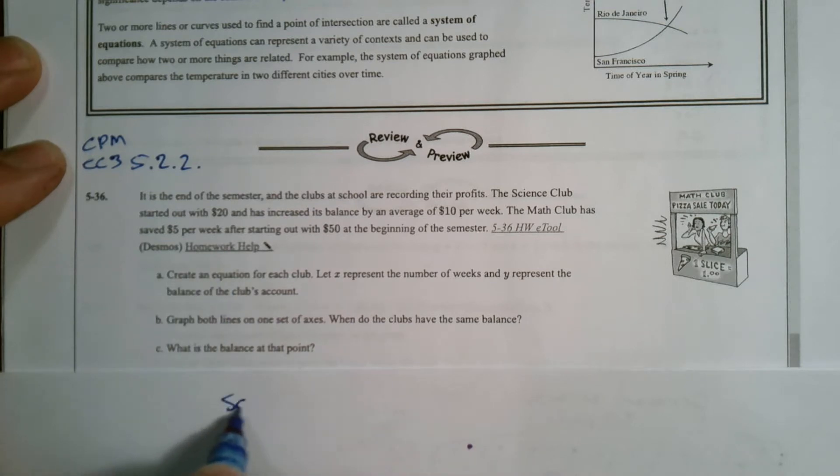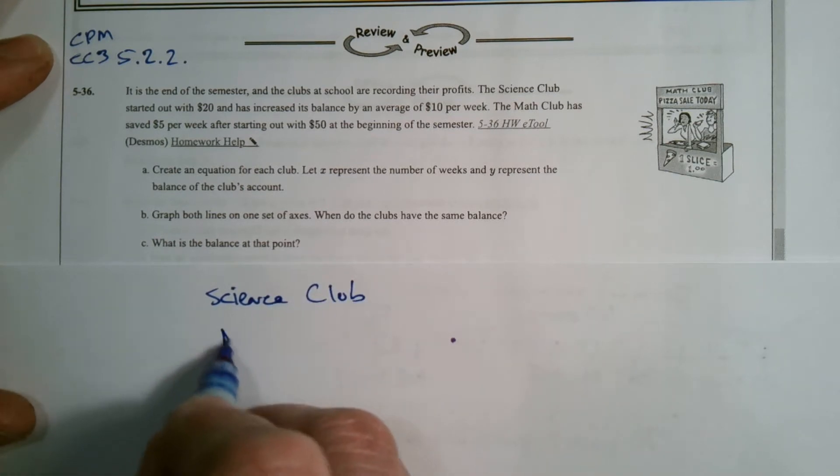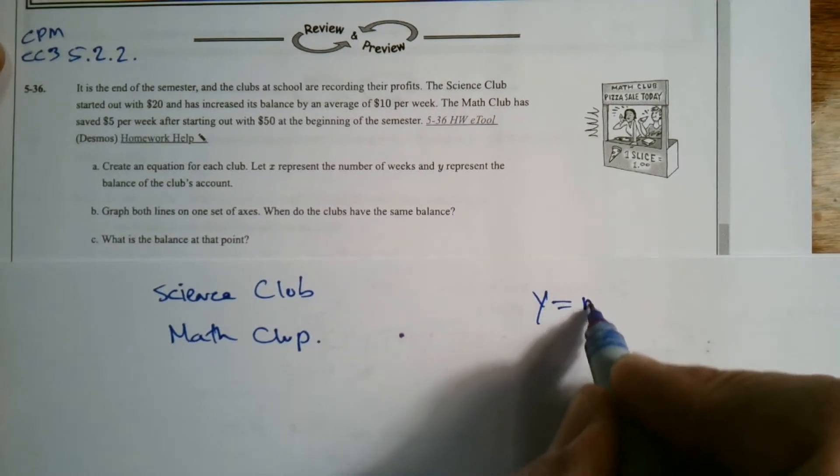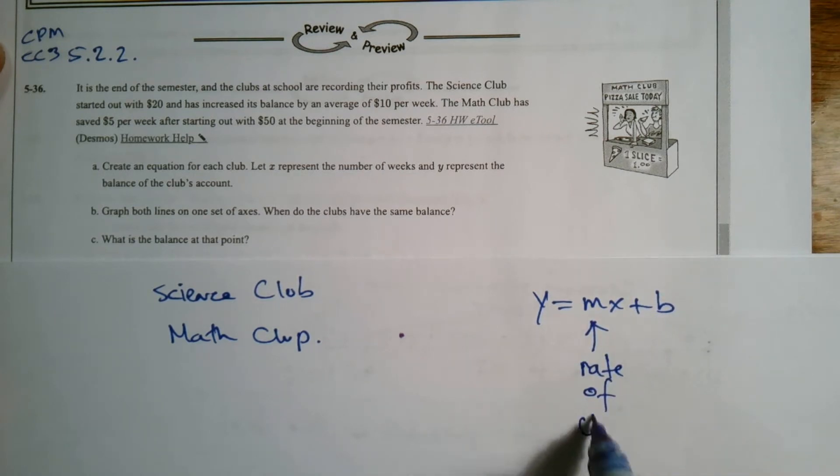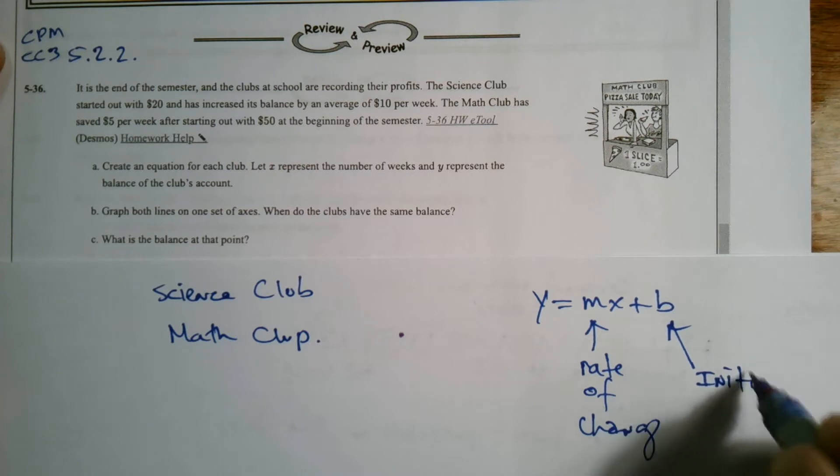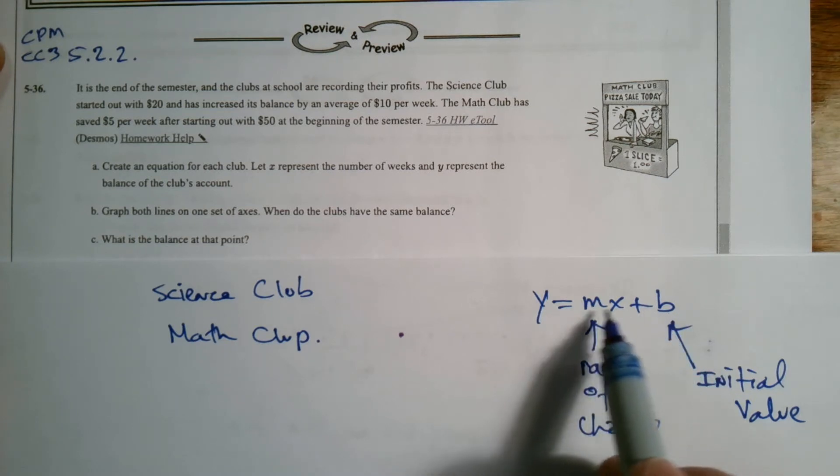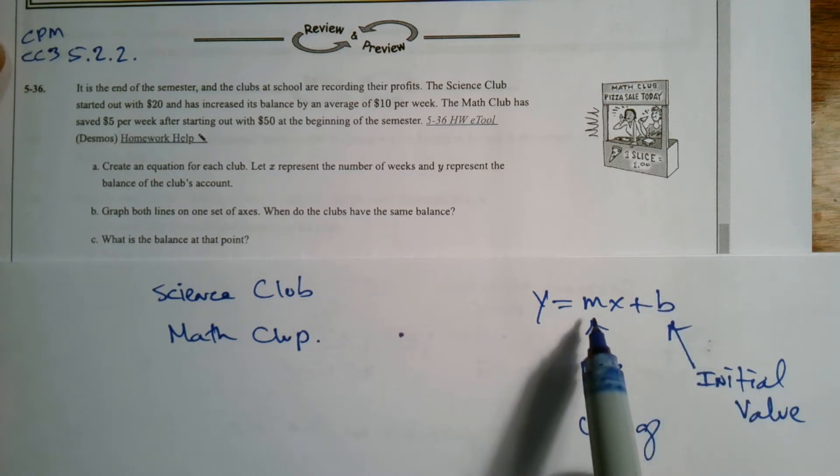I'll write our Science Club and then we have our Math Club. We know that any equation is Y equals MX plus B when we talk about certain aspects. We know that M is the rate of change, and we know that B is the initial value. Some may say that's the Y-intercept and this is the slope. When you think about what happens on the graph, graphically yes, that's the Y-intercept and that is the slope. But as application serves us in this case, this is an application problem. We're dealing with B as the initial value and M as the rate of change.